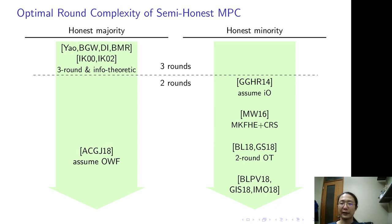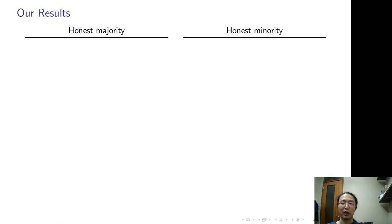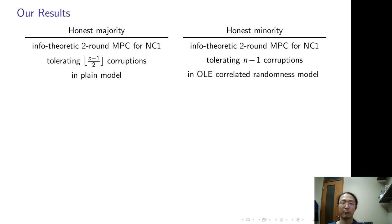In the honest majority setting, also in 2018, Ananth et al. constructs a two-round MPC assuming one-way function. Then in the same year, Applebaum et al. and Garg et al. make it information theoretical. Our work developed the technique from IKO and ABT18. We construct information theoretical two-round MPC in two settings - one tolerates less than half n corruptions in the plain model, the other tolerates any number of corruptions in the OLE correlated randomness model.